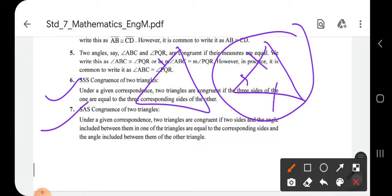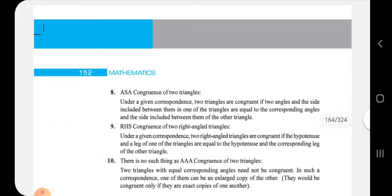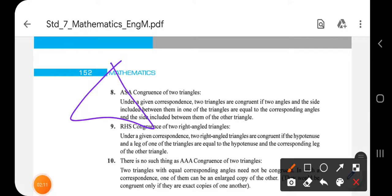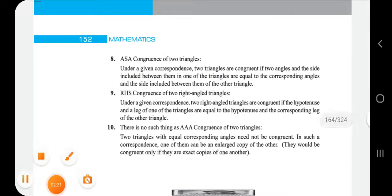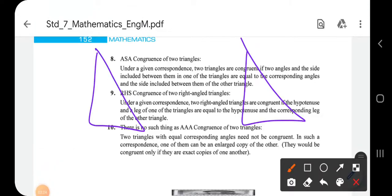ASA, angle-side-angle, same as the other triangle. Then RHS criterion, right angle triangle criterion.